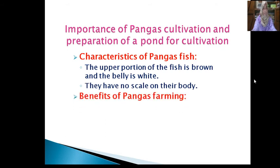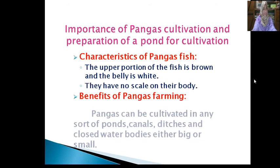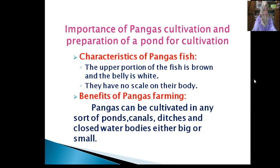Benefits of pangash farming: Pangash can be cultivated in any sort of ponds, canals, ditches, and water bodies either big or small. This fish can be cultivated either individually or in a mixed way, as this fish is omnivorous. It can be produced more by providing supplementary food. The fry or fingerling is easily available from Thailand. Their power of preventing diseases and the rate of survival are high, so there are less risks in farming. This fish can be marketed in living condition by keeping them in little water.